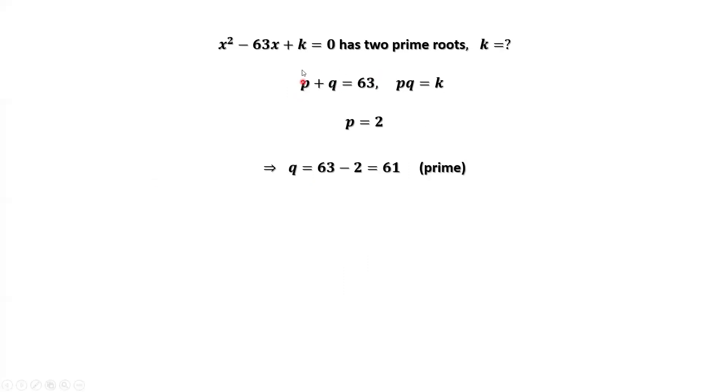From this result, p + q = 63, p = 2. q = 63 - 2 = 61. 61 is also a prime number.